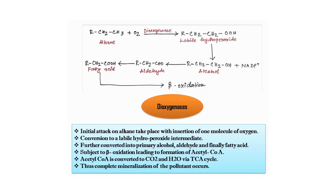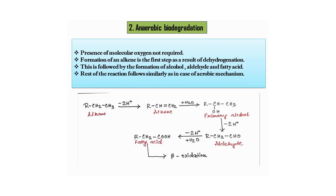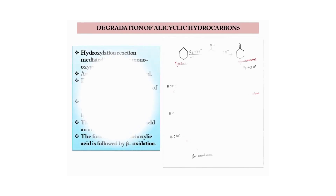This fatty acid is subject to beta-oxidation, leading to formation of acetyl-CoA. Acetyl-CoA is then converted to carbon dioxide and water via the TCA cycle, achieving complete mineralization of the pollutant. In anaerobic biodegradation, molecular oxygen is not required. Formation of an alkene via a dehydrogenation reaction is the first step, followed by formation of alcohol, aldehyde, and fatty acid, with the rest of the reactions proceeding similarly to the aerobic mechanism.